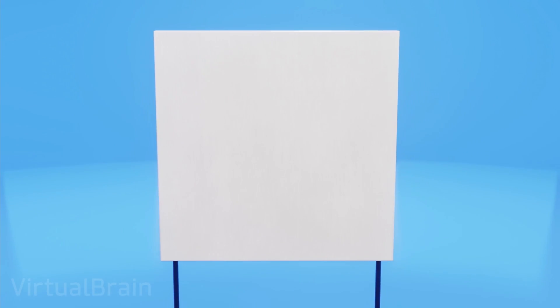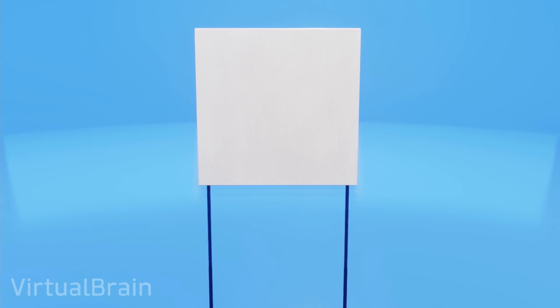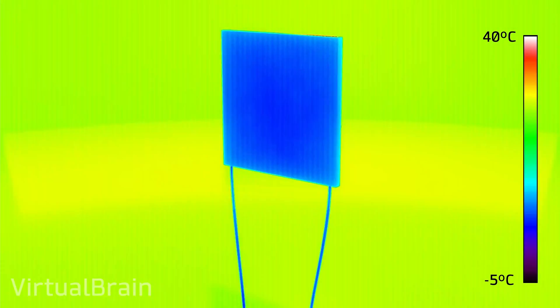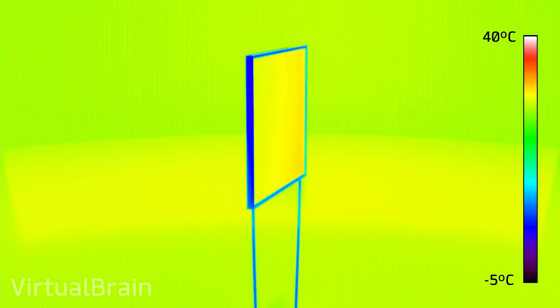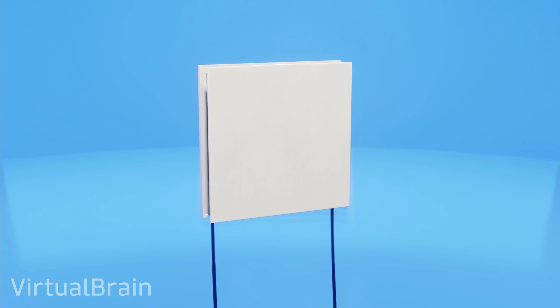A Peltier cell is a component, usually flattened shape, capable of using a voltage to generate a temperature gradient, that is, decrease the temperature of one of its faces while increasing the temperature of the opposite face. This thanks to what is known as the Peltier effect.